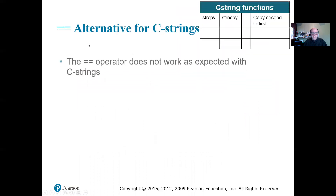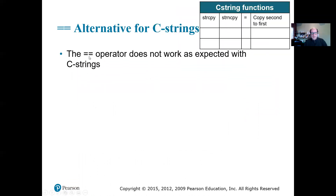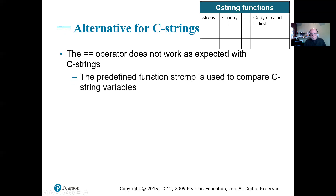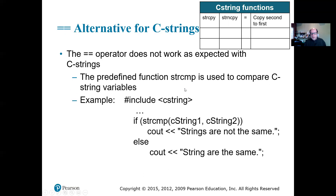Moving on to the next one — that is equality. So if I want to compare two C strings with each other, I'm checking for equality. Again, the equality operator does not exist for C string, so there is a function for it. The function is strcmp — string comparison. The way it works: it checks the first one against the second one. If they are equal, it returns zero.